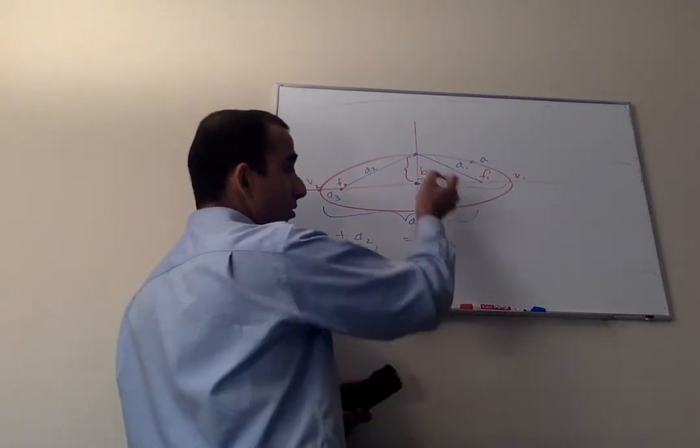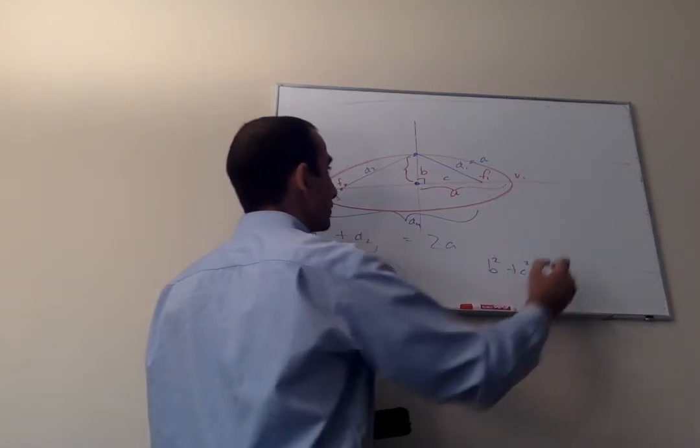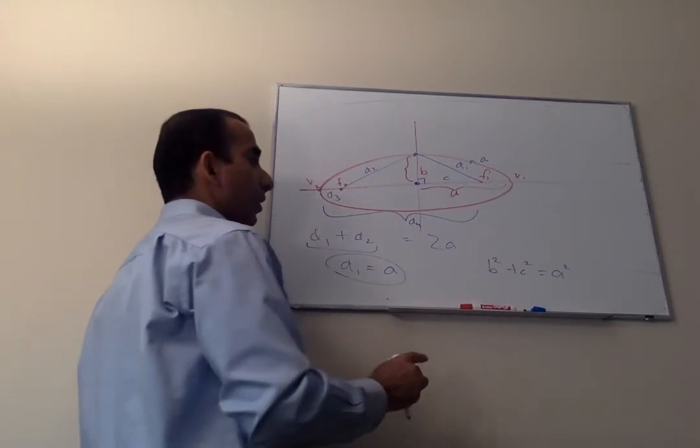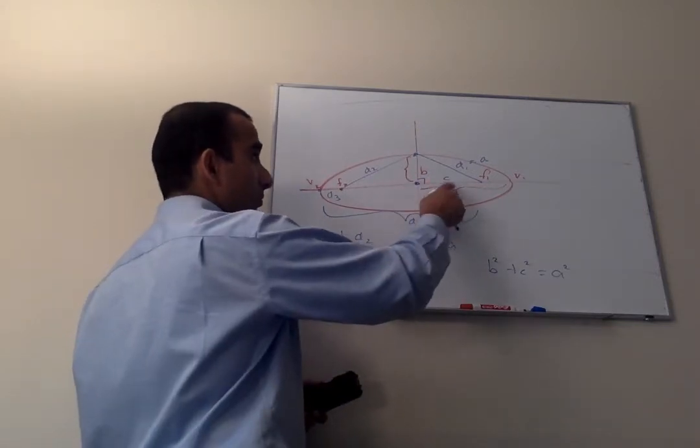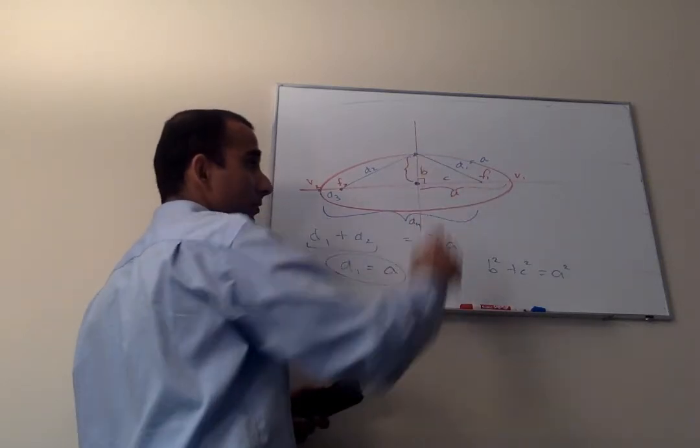So from this, you know from the Pythagorean theorem that B squared plus C squared is equal to A squared, or D1 squared. That's the Pythagorean theorem. B squared plus C squared equals A squared, because A is also D1 over here.